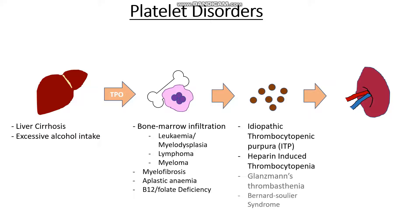These two conditions — Glanzmann's and Bernard-Soulier — are rather fine print, so don't worry too much about them. The last thing that could happen is that we may have an overactive spleen — a very hungry spleen which eats a lot of our platelets — in something like hypersplenism.